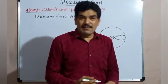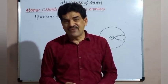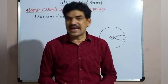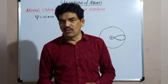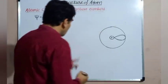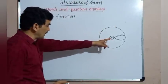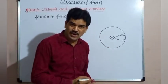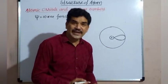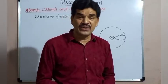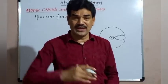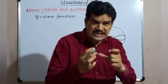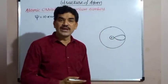These atomic orbitals in an atom are different with respect to their shape, size, and orientation. A number of atomic orbitals are possible in an atom around the nucleus, and these atomic orbitals are different with respect to their shape, size, as well as orientation.